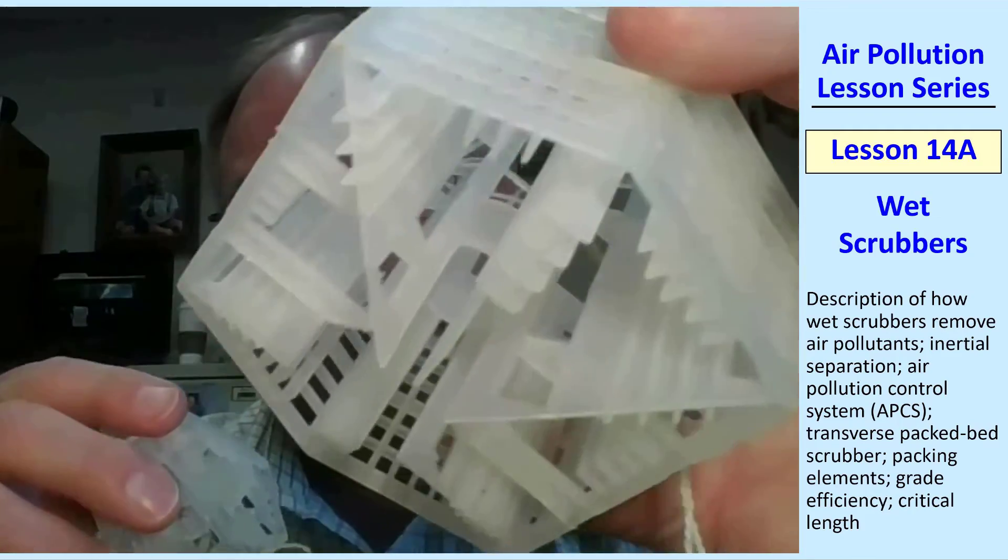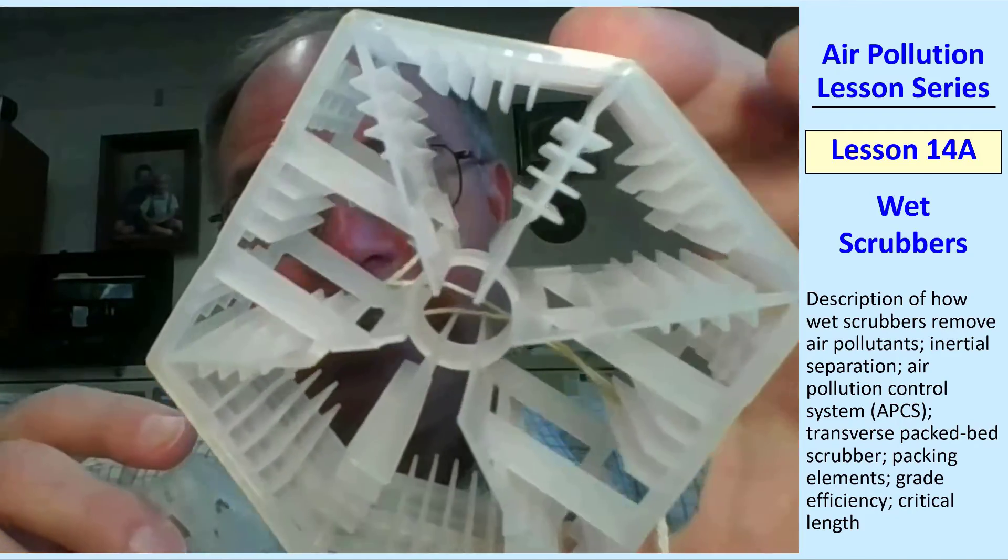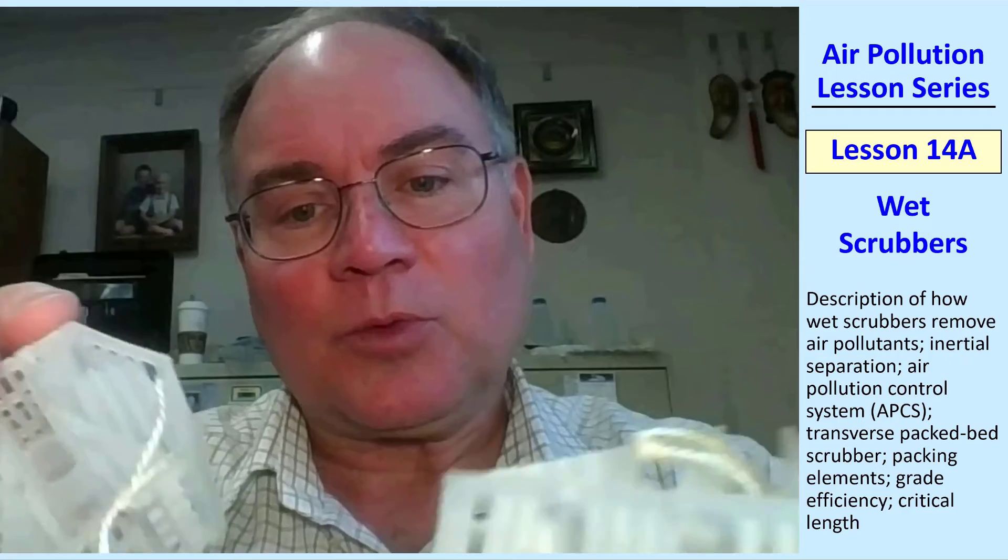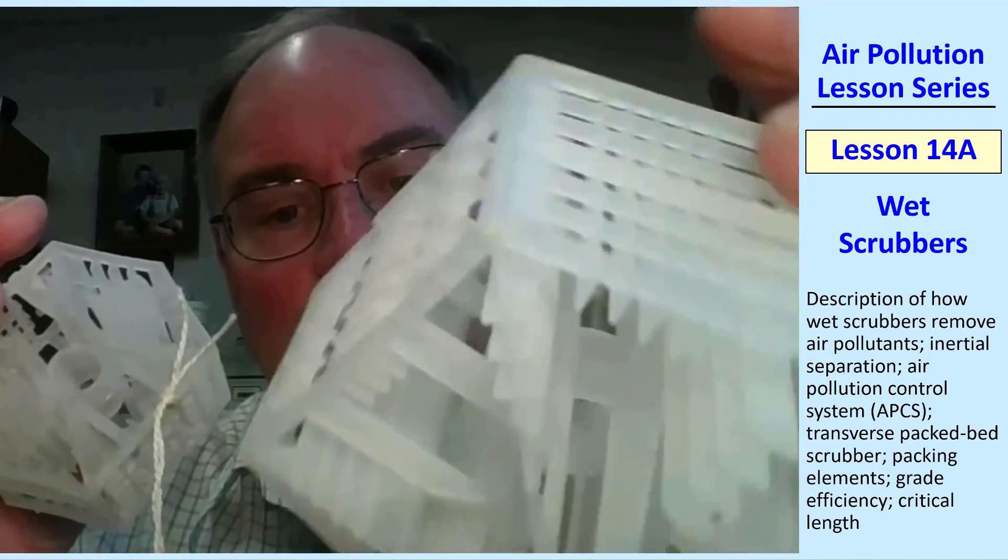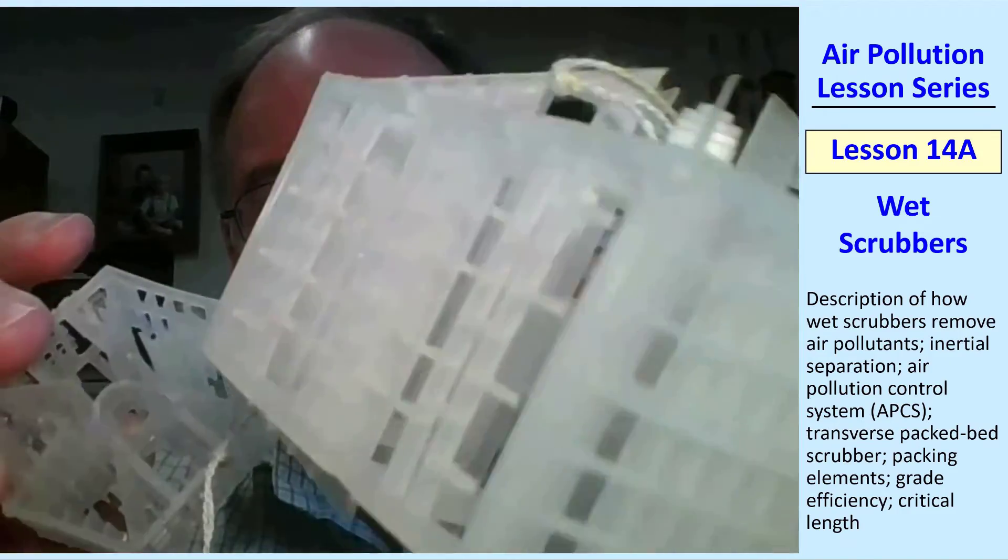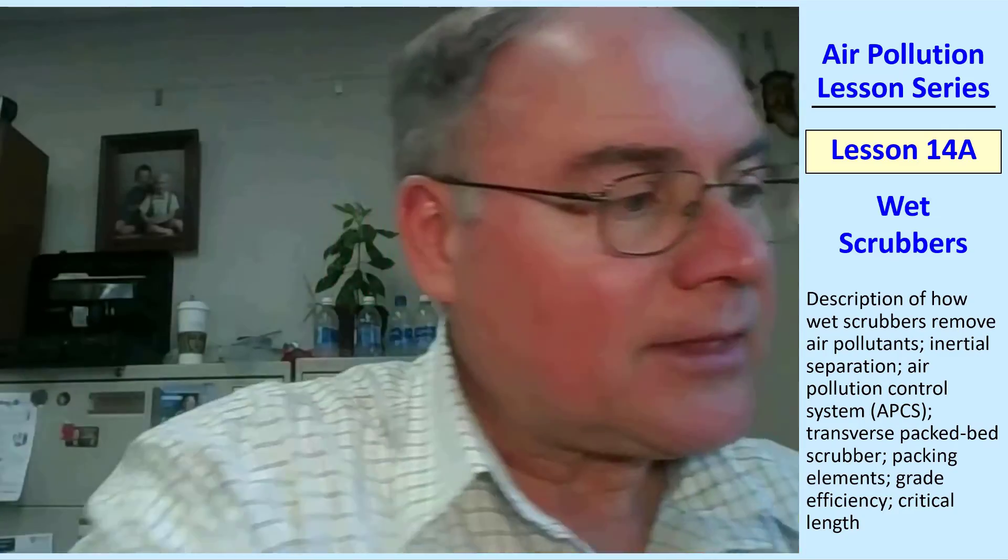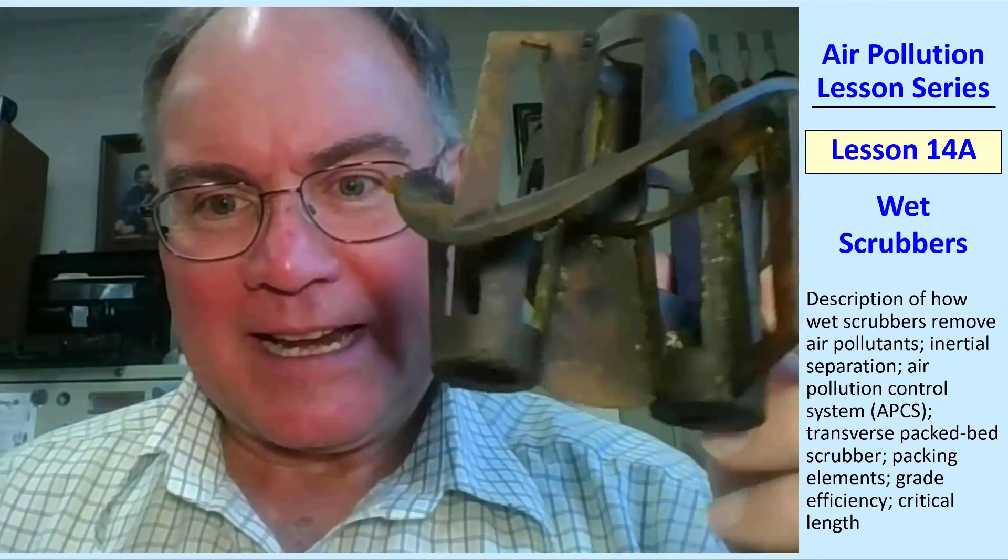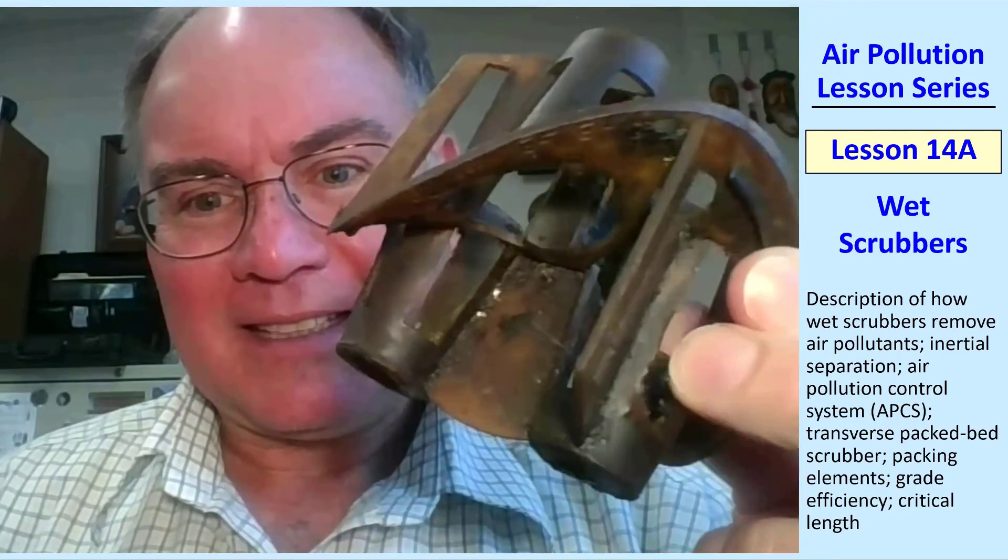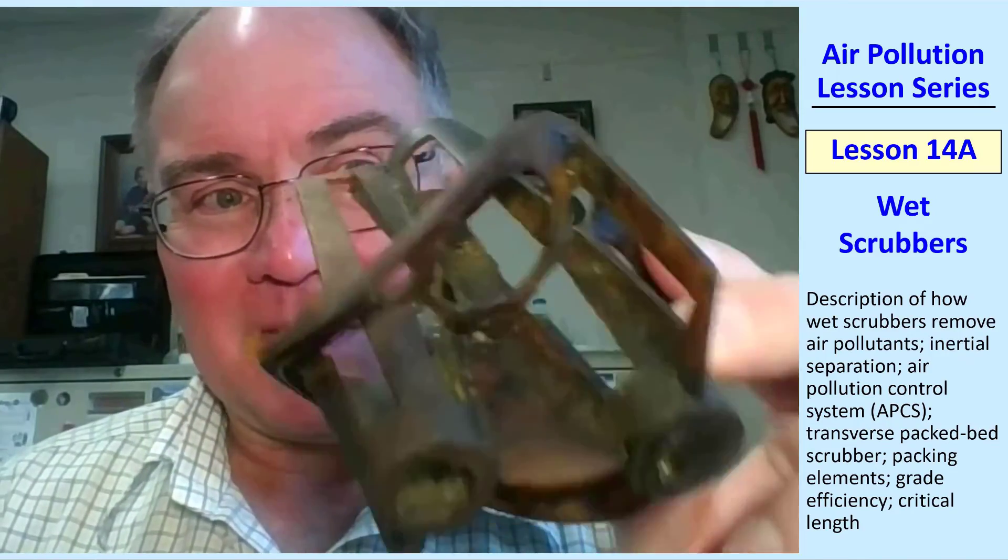The packing diameter is not necessarily the diameter of the entire thing. It's really all these little elements in there, these little rods. That's what the air has to move around. So we want all that to be wet, and the air has to go through all this path. Here's a used one we got out of a packed bed scrubber. A lot of the air pollutant particles stuck on this packing element.